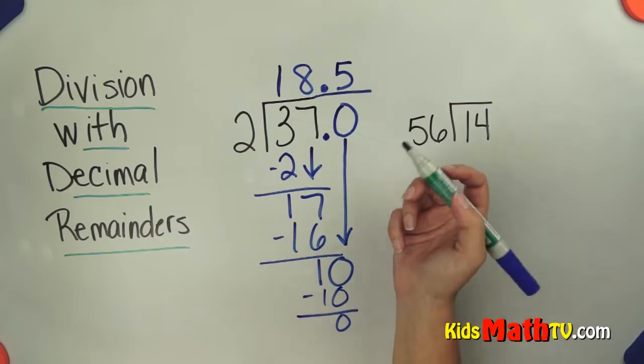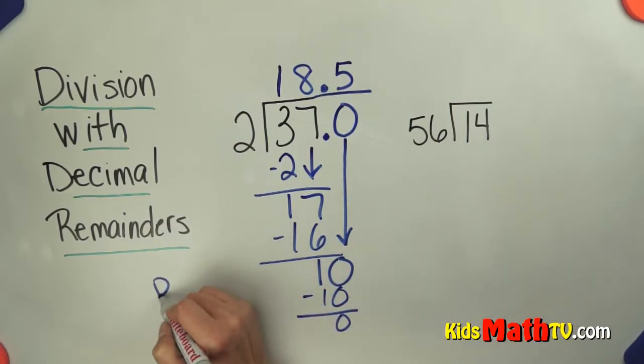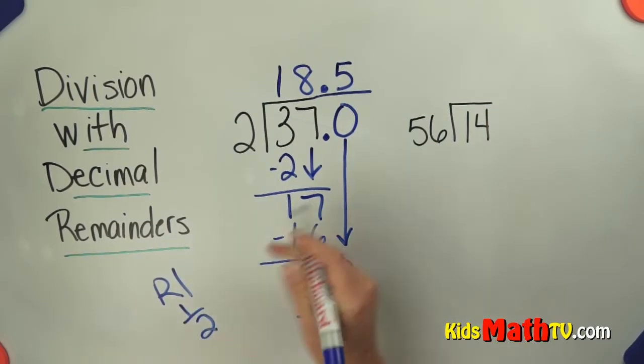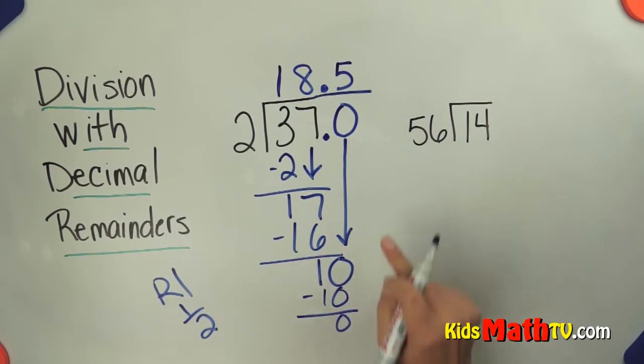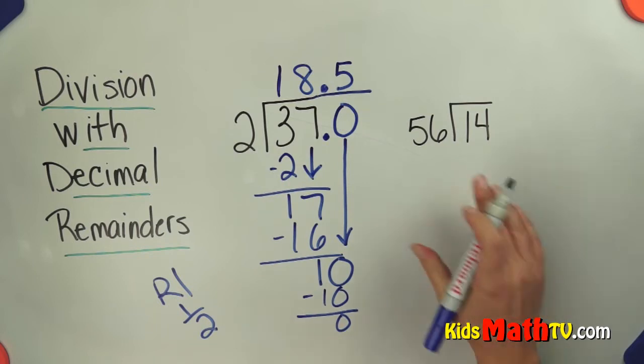So instead of a remainder with a remainder, it's not a remainder 1 and it's not 1 half as a remainder. We actually add a zero, bring it down, and we end up finishing it out. So it's not really a remainder, but it kind of is a remainder. Alright?